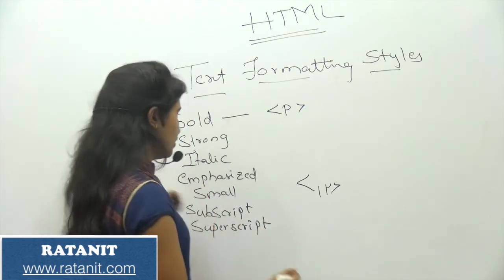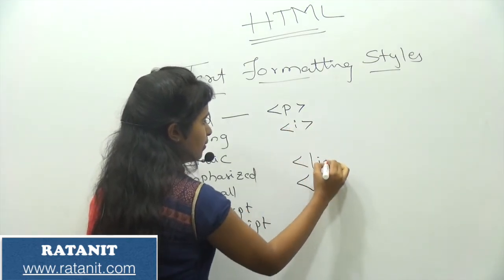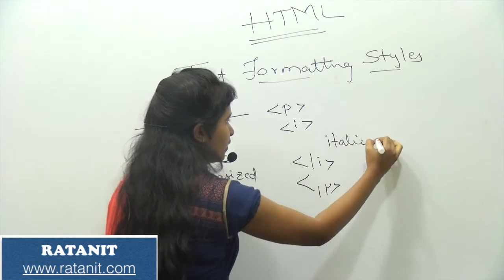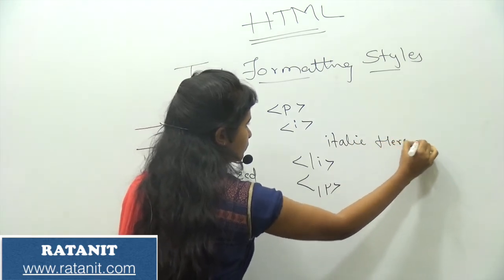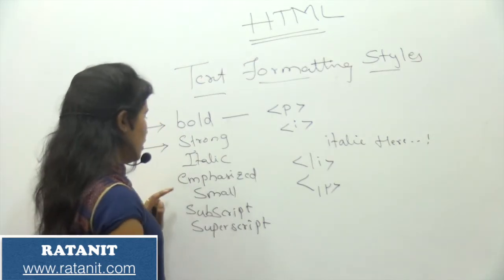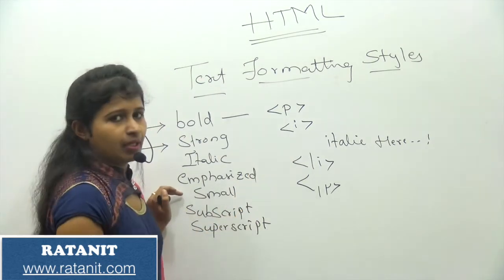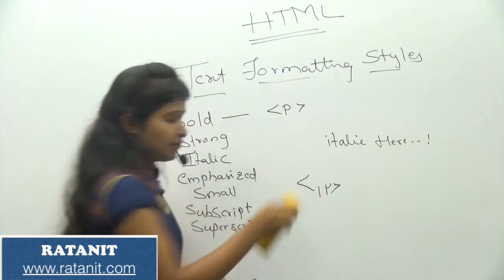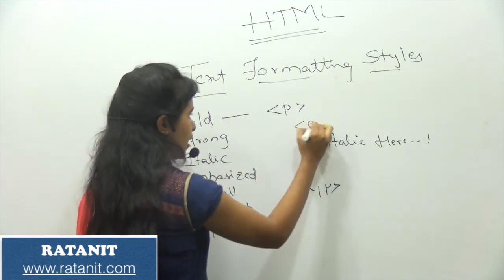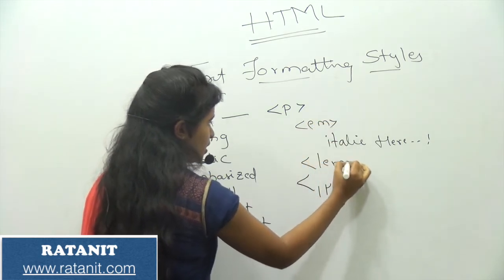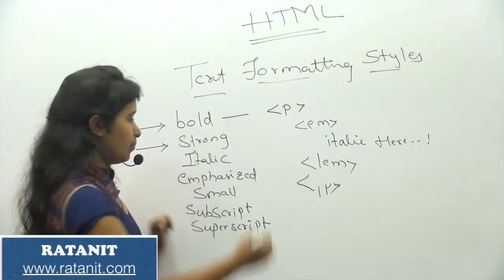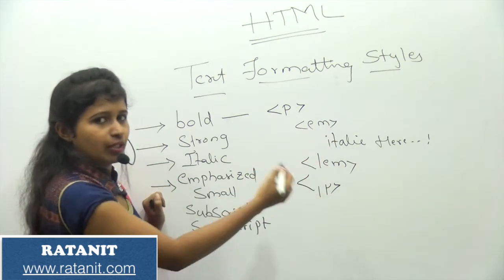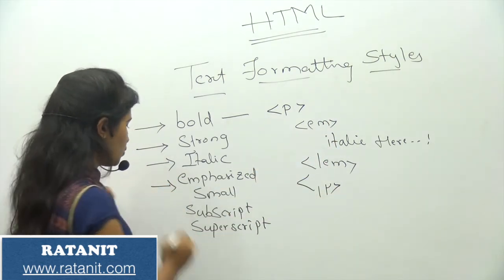Coming to italic: the tag is 'i' — open and close. Whatever content you write inside will display in italic. Italic and emphasized are the same; the only difference is that instead of the 'i' tag, you use 'em' for emphasized. Italic and emphasized both work equally — you can use either the i tag or the em tag.